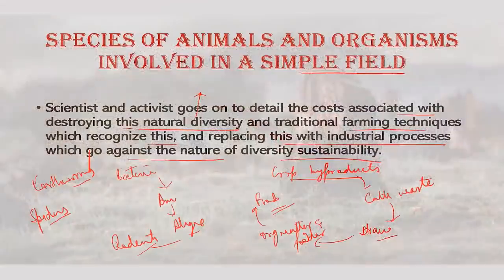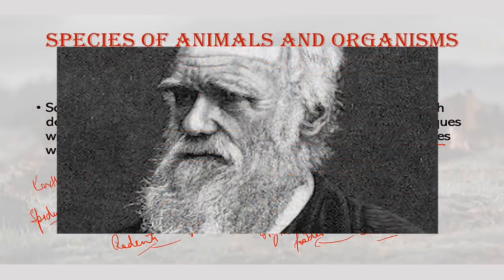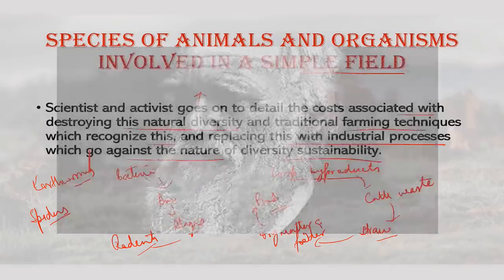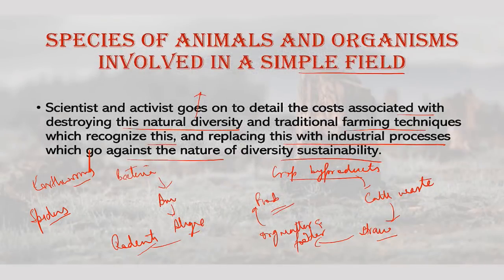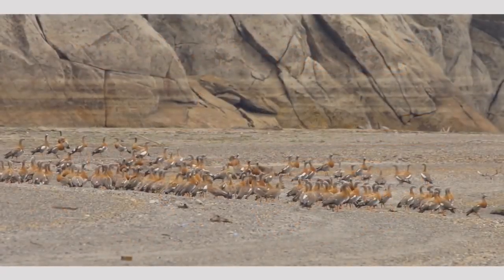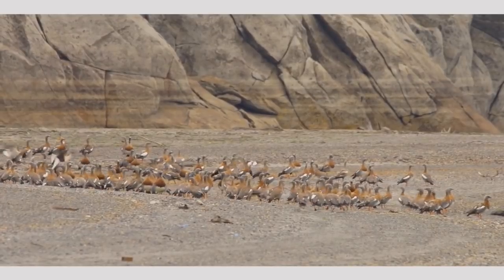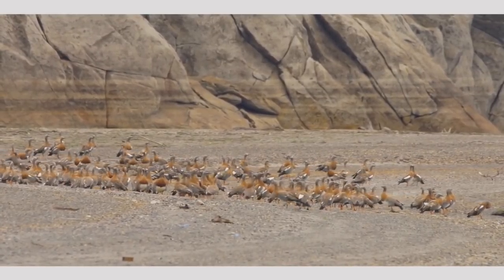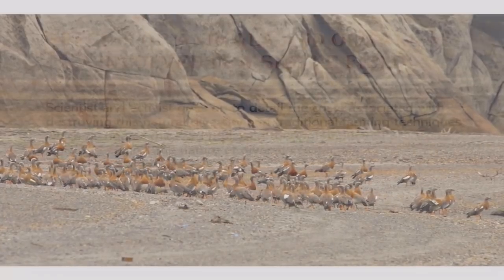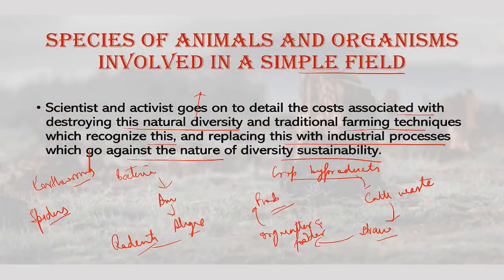Earthworms contribute to soil fertility — they provide aeration, drainage and maintain soil structure. According to Charles Darwin, it may be doubted whether there are many other animals which have played so important a part in the history of creatures. The earthworm is like a natural tractor, fertilizer factory and dam combined. Industrial farming techniques would deprive these diverse species of food sources and assault them with chemicals, destroying the rich biodiversity in the soil and the basis of soil fertility renewal.